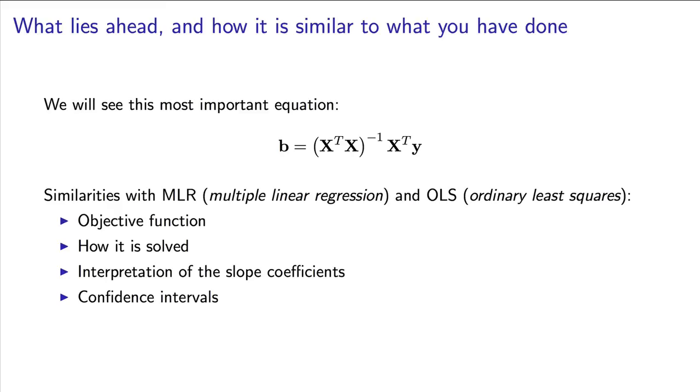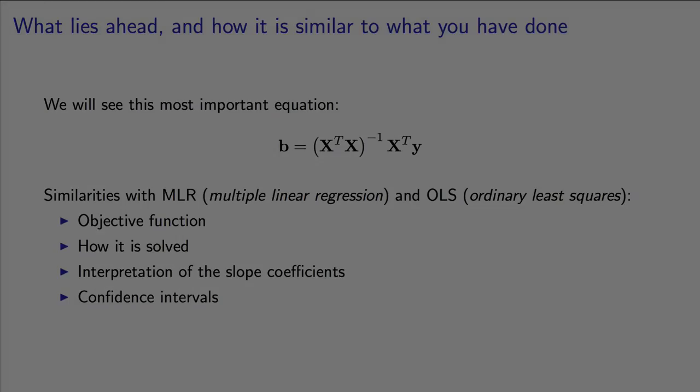Multiple linear regression is no different to regular least squares. The interpretation of the objective function, how we solve it as an optimization problem, and then the interpretation of the model outputs are all mostly the same. There's a few minor differences along the way, and I'll point those out.